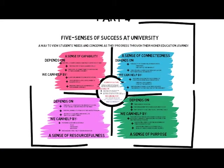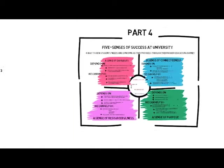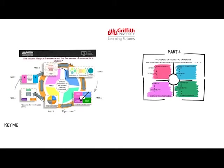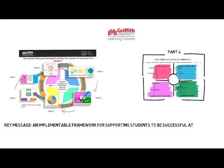So, what's the key takeaway here? There are some very simple things we can do to support students to be successful at university, and they are connection, purpose, capability, and resourcefulness. All of these build identity.